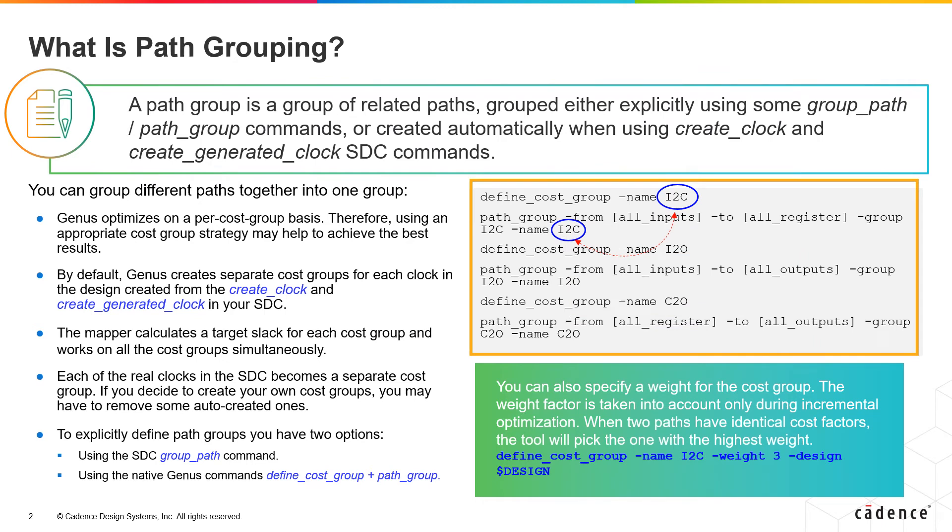Typically, the path groups which are created include input to output paths i2o, input to register path i2c, register to register path c2c, and register to output paths c2o.